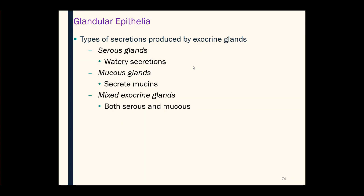On our last slide, just a couple of definitions. When a gland produces a watery secretion, we call that a serous gland. If the gland produces a thicker mucus, that is a mucus gland. And some glands are mixed — they produce a combination of serous and mucus secretions. That concludes our lectures on epithelial tissue. The next lessons will be on connective tissue.